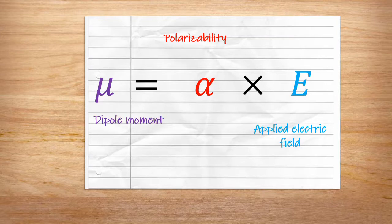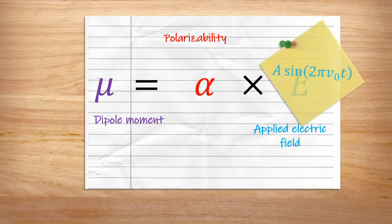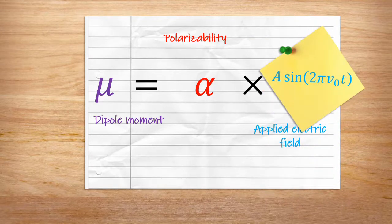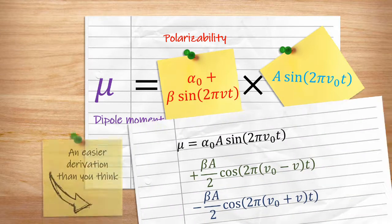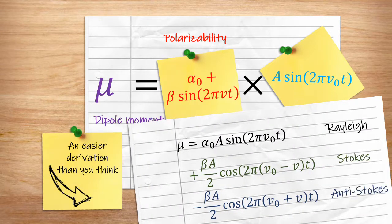Of course, the electric field from light oscillates, so we can replace E with a time-dependent sine wave. And if polarizability also changes with the frequency of a vibration, we can also replace that term with a time-dependent version. Putting these two together, and with a little mathematical transformation, gives us a dipole that consists of three terms.